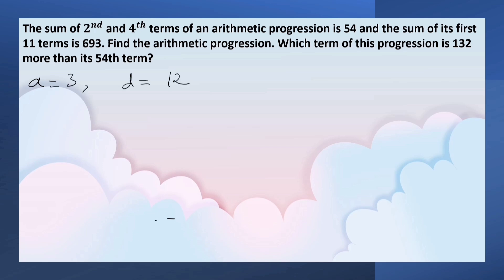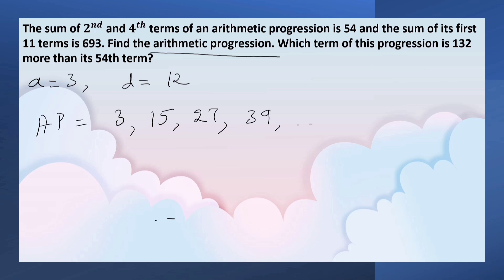So now we have A equals 3 and D equals 12. Now we can write the arithmetic progression. The arithmetic progression is 3, 15 (3 plus 12), 27 (15 plus 12), 39 (27 plus 12), and so on.